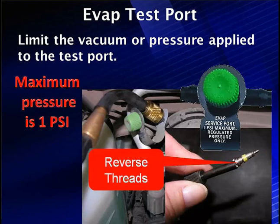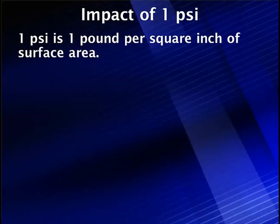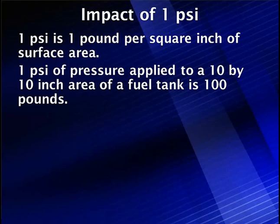Let me show you what 1 psi of pressure does. Remember, this is 1 pound per square inch of surface area. The force equals 1 psi times the square inches of the area. Let's say we apply it to a 10 by 10 inch area of a fuel tank — that's 100 pounds of force. If we made that much larger, like a 400 to 500 square inch gas tank, we're talking about 400 to 500 pounds of force for just 1 psi applied.